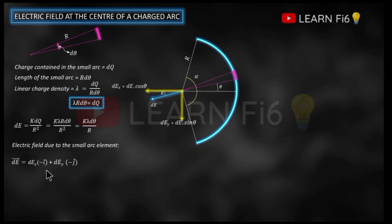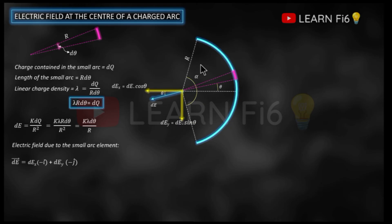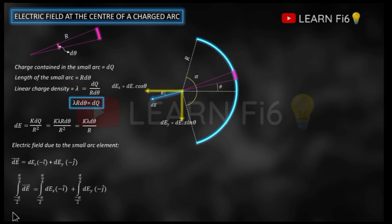To get the electric field due to the entire arc, we integrate this value. The entire angle is alpha, which we split into two halves measured from the horizontal line. In the upper part the angle is positive and in the lower part it is negative. So the arc spans from minus alpha by 2 to plus alpha by 2, and those are the limits of integration.